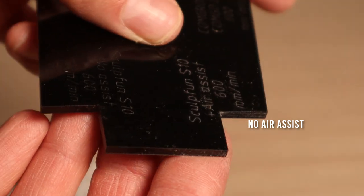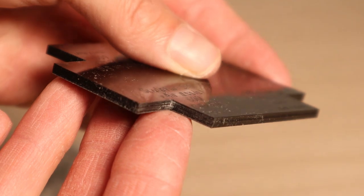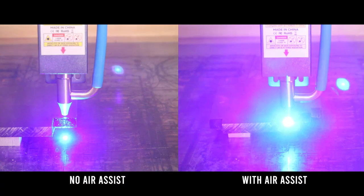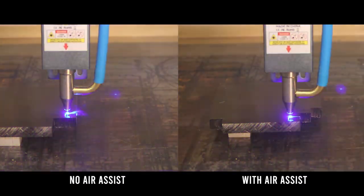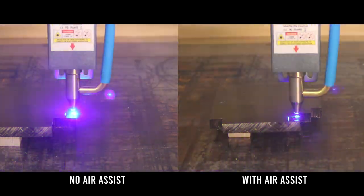The air assisted engravings come out with more contrast. Then I tried to cut this almost 10mm thick piece of black acrylic that no machine was able to cleanly cut it so far.